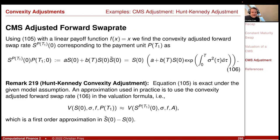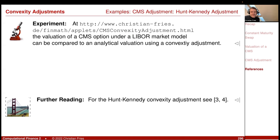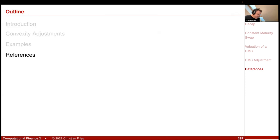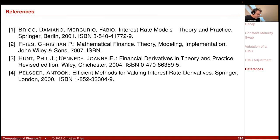That was it for the convexity adjustments. This is the convexity adjusted swap rate. There is some literature — the original by Hunt and Kennedy, who have a nice book if you'd like to look into this. And that was it for the analytic valuations. Thanks.